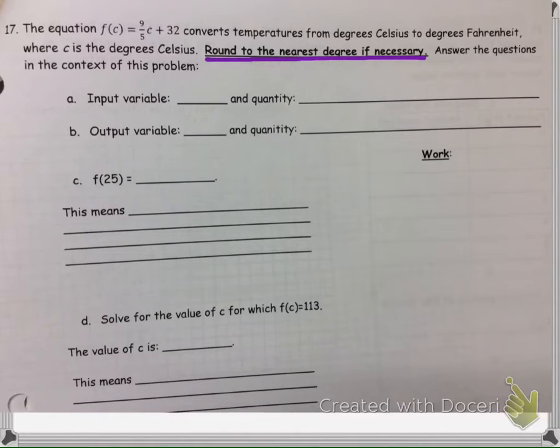First of all, it asks for our input variable and quantity. When we're given an equation, this variable that's all by itself is always the output. So we know that the F, or I will also accept F of C, represents the temperature in Fahrenheit.